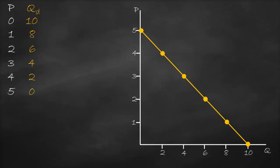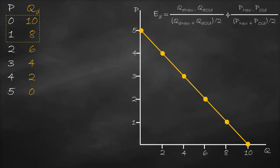Connecting all these points gives us the demand curve. We need to calculate the price elasticity of demand if the price increases from 0 to 1. The formula is: percent change in quantity demanded divided by percent change in price. We will use the midpoint formula: new quantity minus old quantity divided by their average, divided by new price minus old price divided by their average.